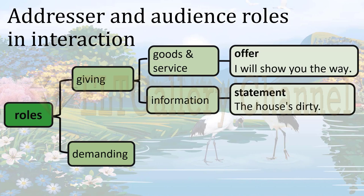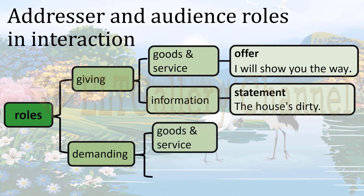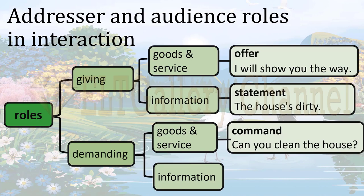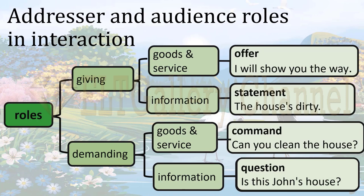The addresser can also demand goods and service or demand information. In the sentence 'Can you clean the house?' the addresser demands the audience to clean the house. And in the sentence 'Is this John's house?' the addresser demands information about the house. These are the two roles the addresser and audience show in an interaction: giving goods and service, giving information, demanding goods and service, or demanding information. When the addresser gives goods and service, that's an offer; when he gives information, he produces a statement; when he demands goods and service, that's a command; and when he demands information, that's asking a question.